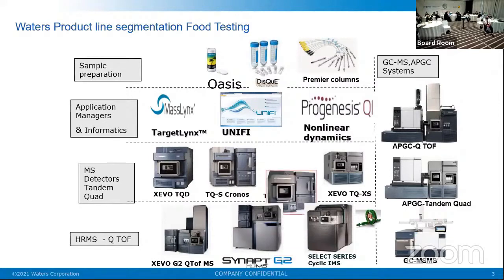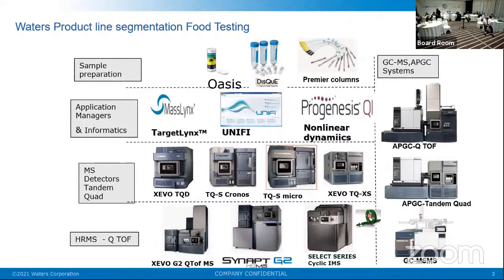There are mass specs we prefer — the TQS Micro is one machine we prefer for quantitative workflows. For qualitative workflows, we use the G2-XS QTof, which is a bench-top model. On this system you can perform liquid chromatography as well as gas chromatography on the same machine. You can use it for polar as well as non-polar pesticides: polar pesticides go into liquid chromatography, and non-polar pesticides go into gas chromatography.